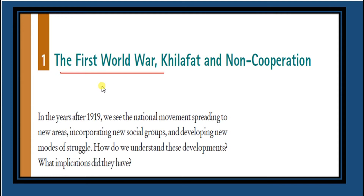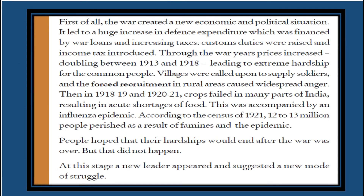When the First World War was over, Germany lost the battle. The war was fought from 1914 to 1918, and once Germany lost the war, the British made Germany sign the Treaty of Surrender. This Treaty of Versailles was signed by Germany and was considered an insulting treaty.